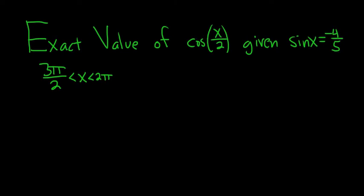Find the exact value of cosine of x over 2, given that sine x is equal to negative 4 fifths, and that x is between 3 pi over 2 and 2 pi. Solution.